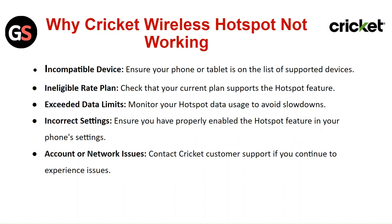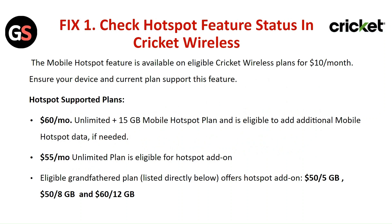Fix one: Check hotspot feature status in Cricket Wireless. The mobile hotspot feature is available on eligible Cricket Wireless plans for $10 per month. Ensure your device and current plan support this feature. The $60 per month Unlimited Plus plan includes 15 GB mobile hotspot and is eligible to add additional data if needed. The $55 per month Unlimited plan is eligible for a hotspot add-on. Eligible grandfathered plans at $50 per 5 GB, $50 per 8 GB, and $60 per 12 GB also offer the hotspot add-on.